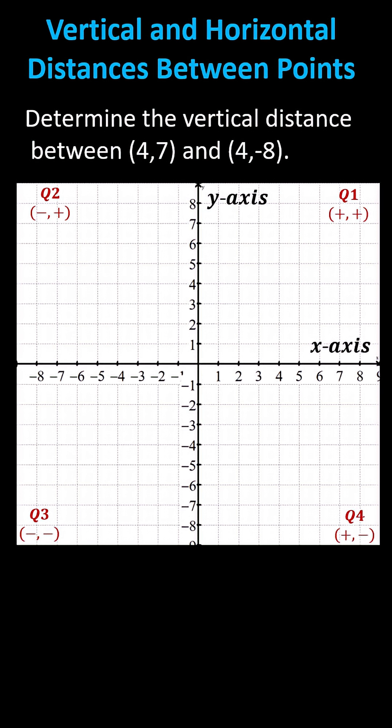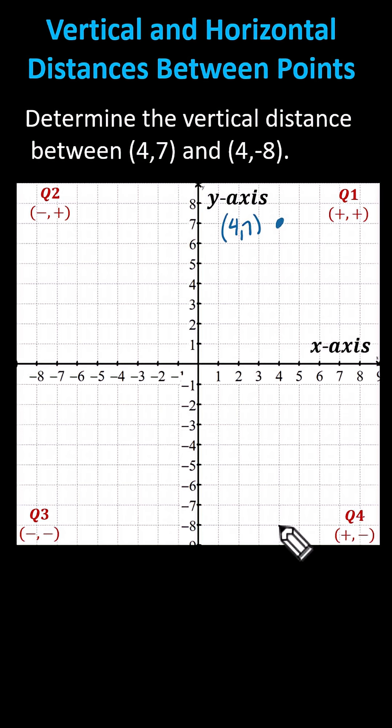Determine the vertical distance between four comma seven and four comma negative eight on the coordinate plane. Let's first plot the two points. For four comma seven, from the origin we move right four and up seven. And for four comma negative eight, from the origin we move right four and down eight.